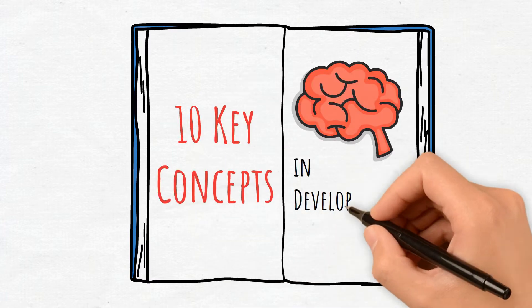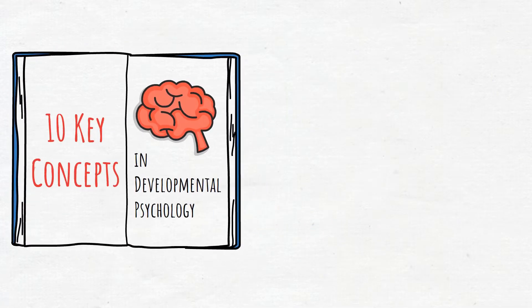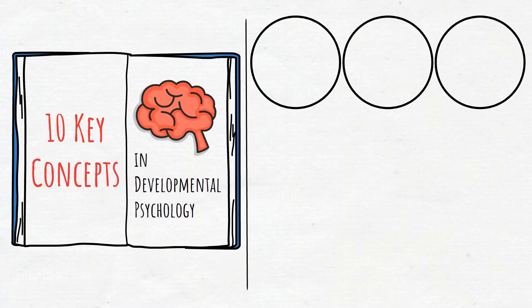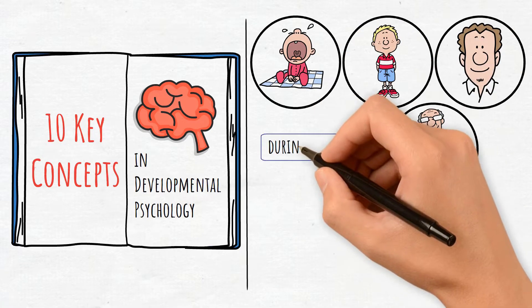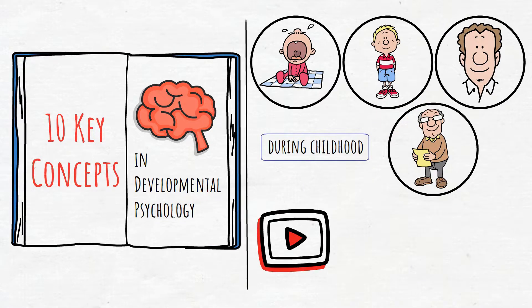10 Key Concepts in Developmental Psychology Explained. Developmental psychology focuses on how humans grow and change across their lifespan, particularly during childhood. Here are 10 key concepts that will better help you understand this field.